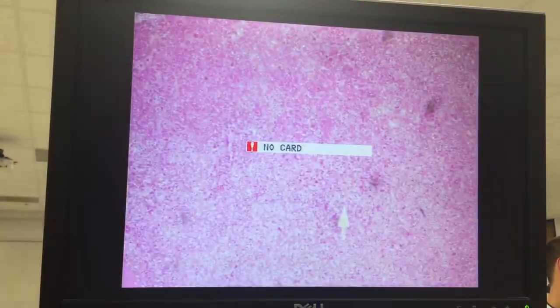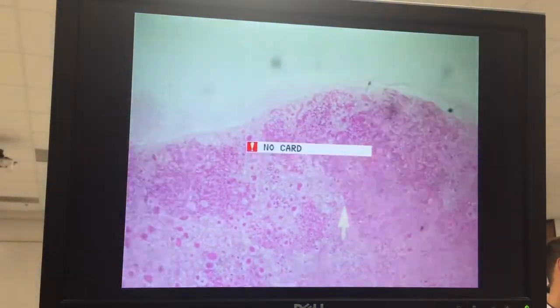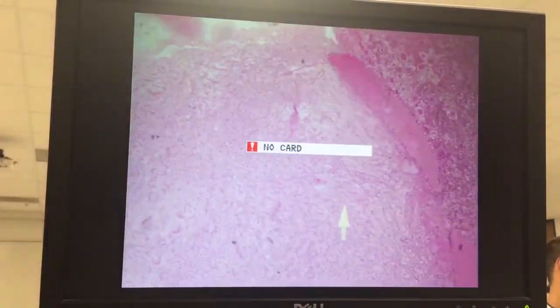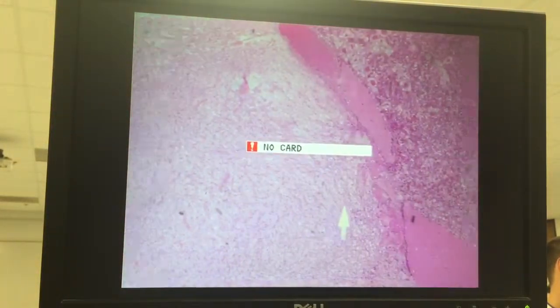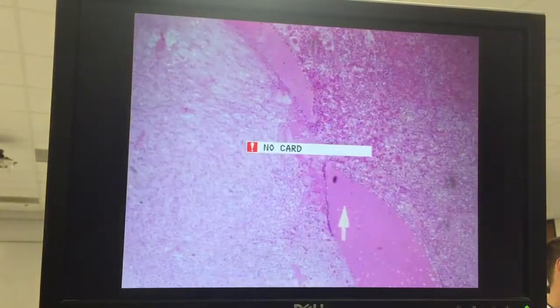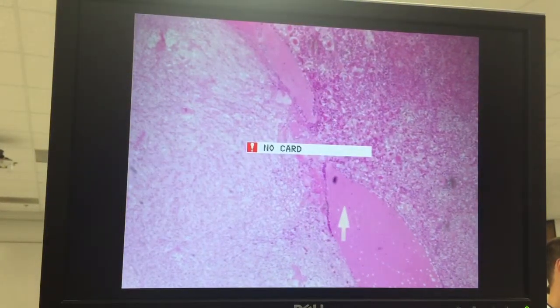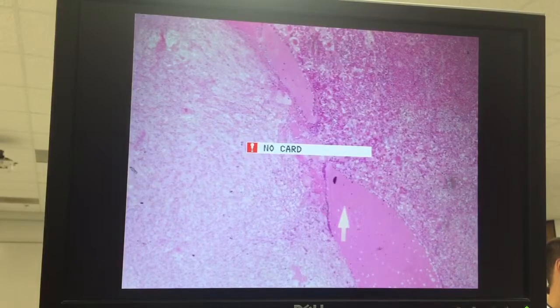We have posterior pituitary here. Here are those colloid crevices, pars intermedia.